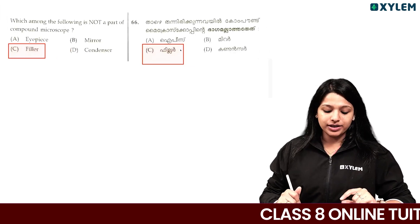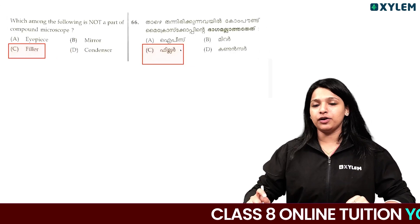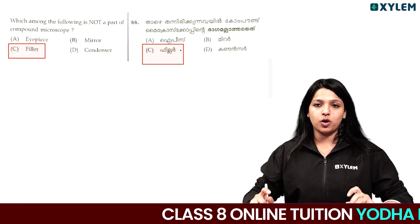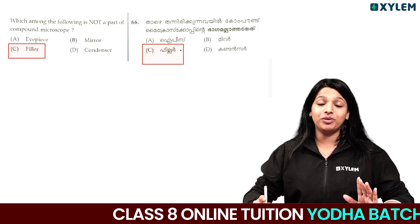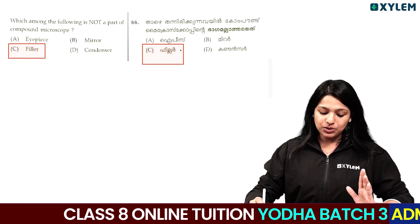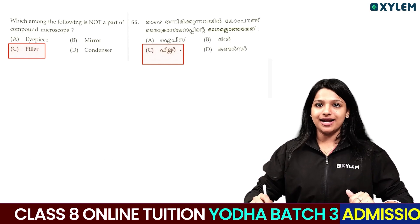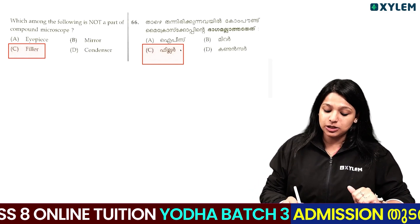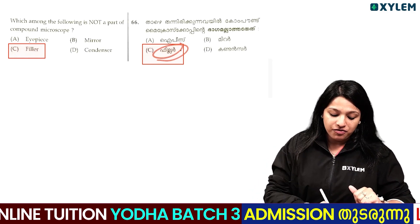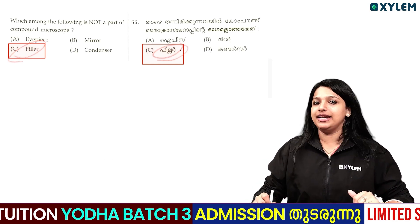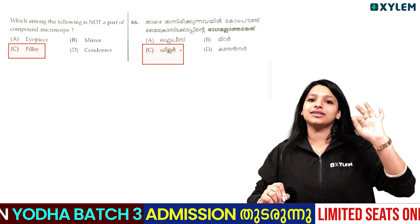Which of the following is not a part of a compound microscope? There is an eye piece, a mirror, a condenser. It is not a filler.